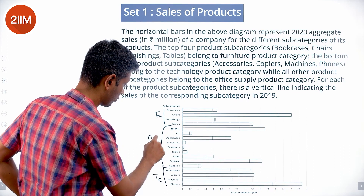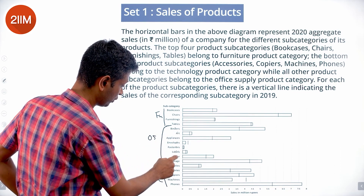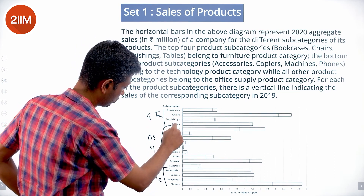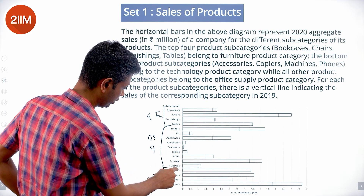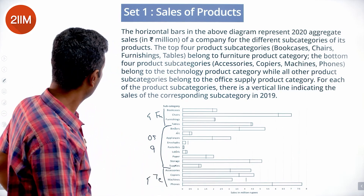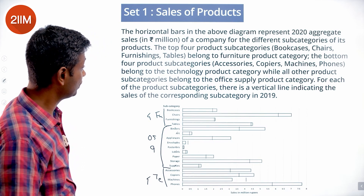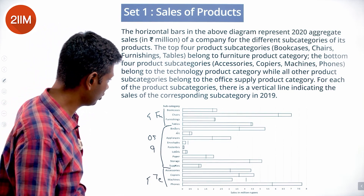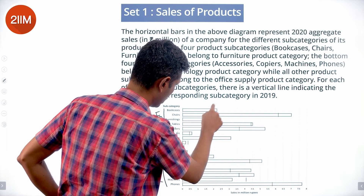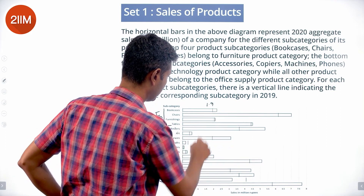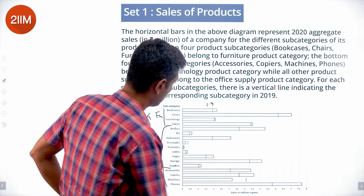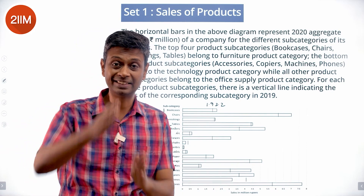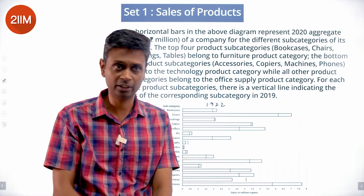Counting the subcategories: 9 in office supplies, 4 in furniture, 4 in technology — the numbers add up. For each subcategory there is a vertical line indicating sales in 2019. So bookcases had about 1.9 in 2019 and 2.2 in 2020. The bar represents 2020 numbers and the line represents 2019 numbers.